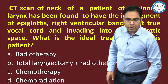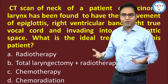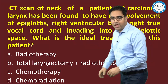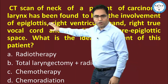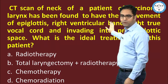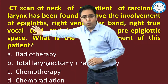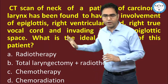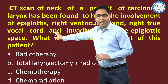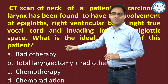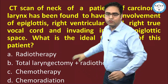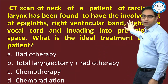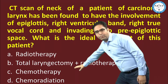Let's do a clinical vignette — a real exam question. CT scan of a patient with carcinoma larynx shows involvement of epiglottis and right ventricular band. Two named structures came — epiglottis and ventricular band (false vocal cord) — so it is minimum T2. Going further: right true vocal cord and invasion into pre-epiglottic space. Any space involvement = T3. So the answer to this question is total laryngectomy plus radiotherapy. Had it been the right vocal cord fixed — again T3, total laryngectomy plus radiotherapy. Thyroid cartilage involved — again total laryngectomy plus radiotherapy. Perichondritis of thyroid cartilage — again total laryngectomy plus radiotherapy.